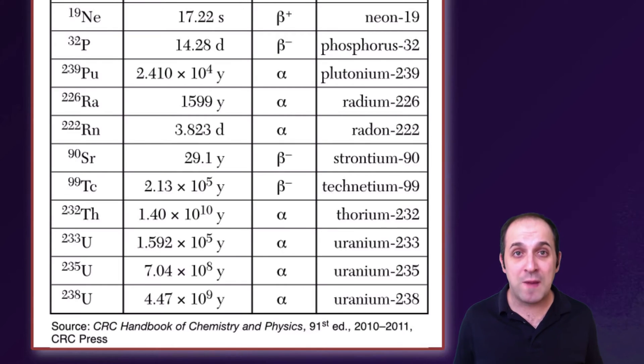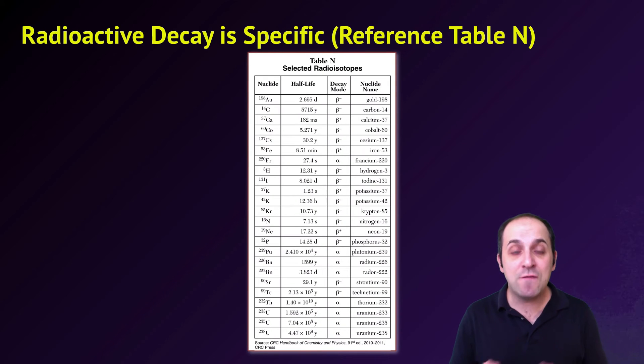Uranium 238 is not going to produce beta particles. Gold 198 is not going to produce alpha particles. Each isotope has a specific mode of decay. And the ones that you need to be most familiar with are the ones that are given to you on reference table N. If you ever forget what one of these decay modes is, you can always go to reference table O and find the symbol on reference table O, and that will tell you what the decay mode is.